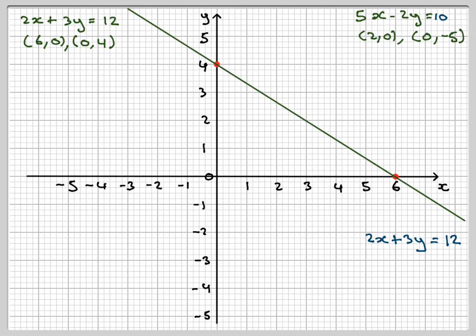Now we move to this one, so we're going to plot the point (2, 0), which is there, and then (0, -5), which is down here.